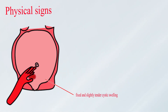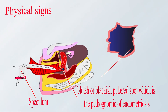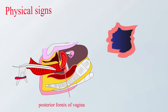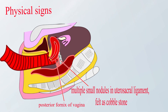On abdominal examination, a cystic swelling can be felt — it is fixed and slightly tender. Speculum examination may reveal bluish or blackish puckered spots in the posterior fornix, which are tender to touch. Multiple small nodules in the utero-sacral ligament and pouch of Douglas can be felt like cobblestones when palpated through the posterior fornix of the vagina.